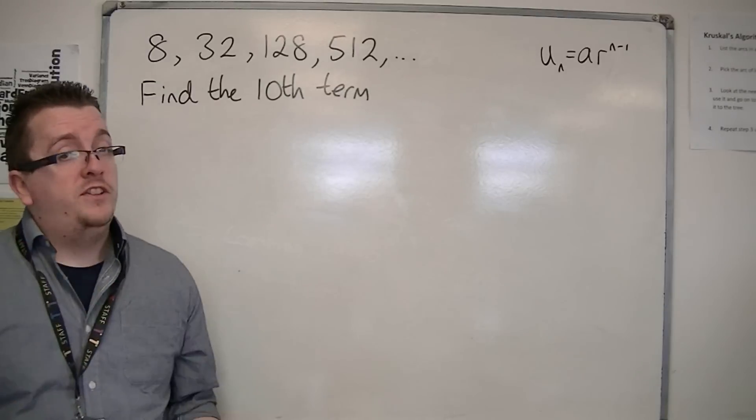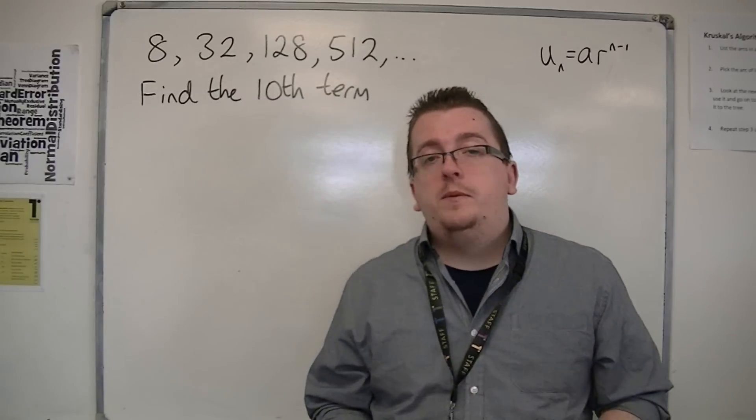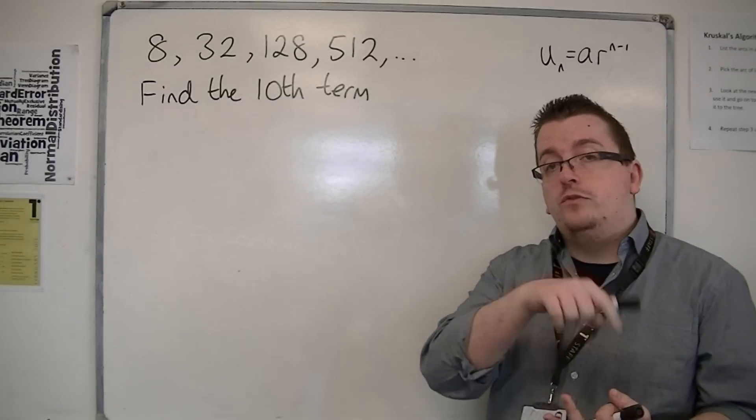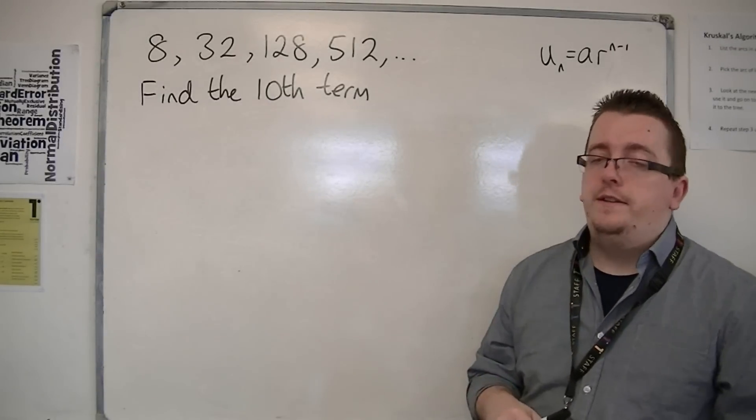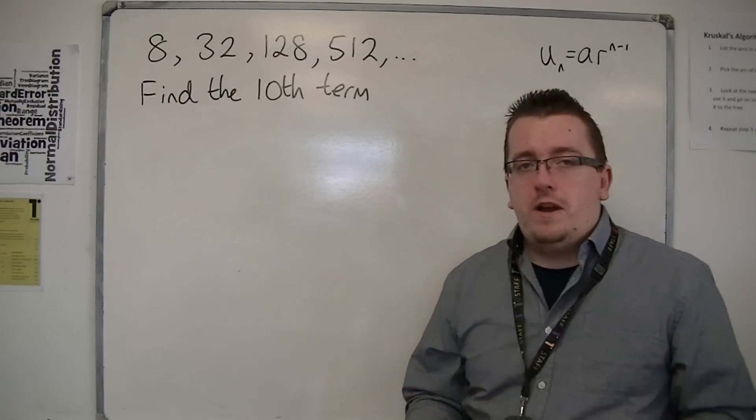We don't want to do that. If it asks us for the 37th term or the 150th term, we don't want to have to use our calculator 150 times in order to find it. So, we need another way round this.